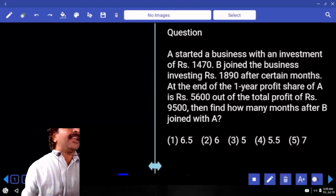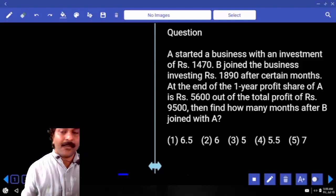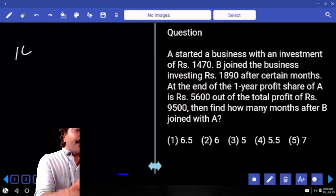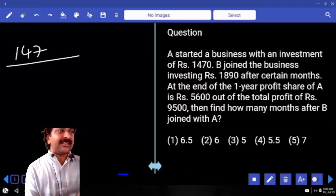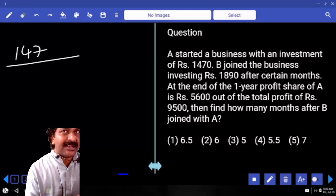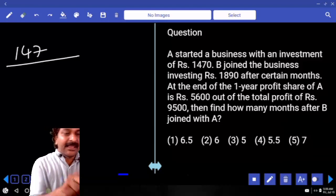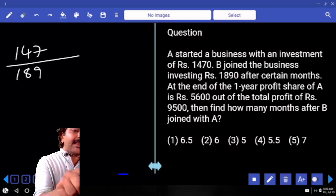Let us assume after X months B joined. A invested 147. There is one zero common in A's investment and B's investment, so I am not considering. B invested 189.